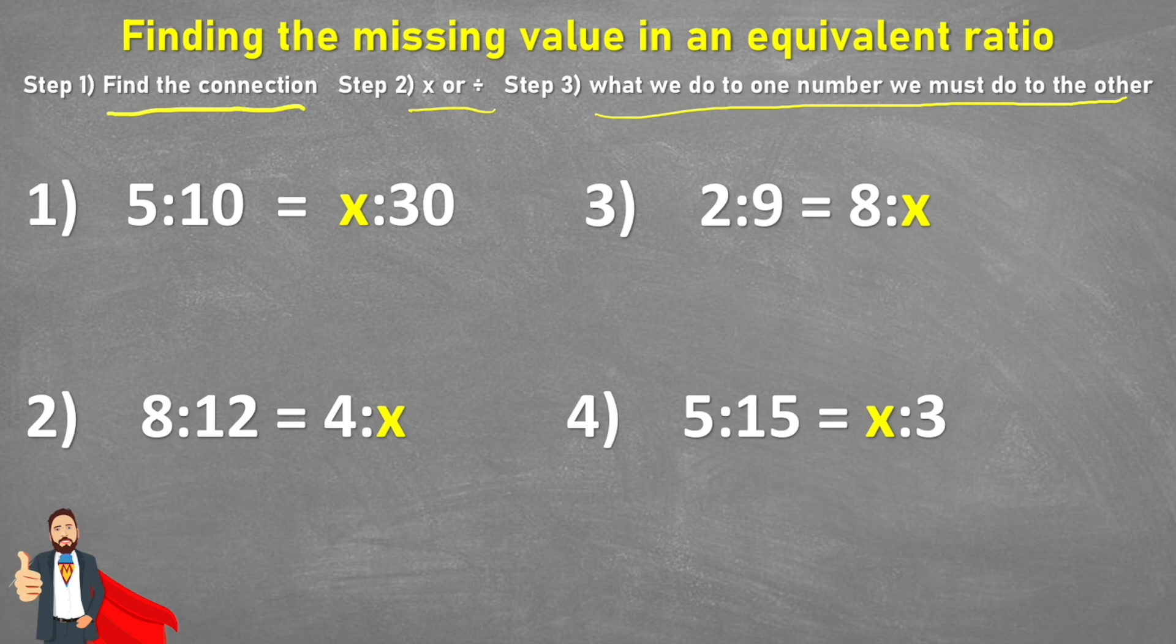So let's see what that means. Let's have a look at question one and we are trying to find the value of this x between these two equivalent ratios. And step one says to find the connection. So what does that mean? Well it means that if these are equivalent, then the two sets of numbers that we have will have some sort of connection. And obviously with a ratio the order that the numbers are written is really important. So this 10 is paired with this 30.